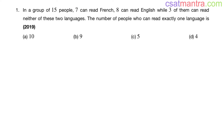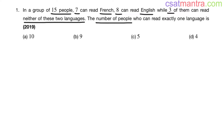In a group of 15 people, 7 can read French, 8 can read English, while 3 of them can read neither of these two languages. The number of people who can read exactly one language is?